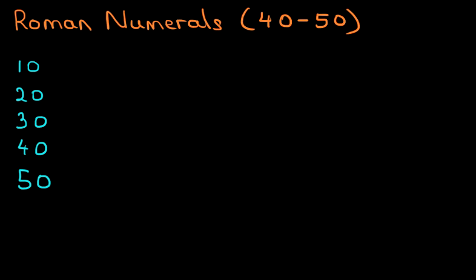Now the Roman numeral for 10, we've done this before, is simply X. X means 10. The Roman numeral for 20 is X and X again. Notice there are zero units, therefore we just leave the X's. There are no I's and no V's.